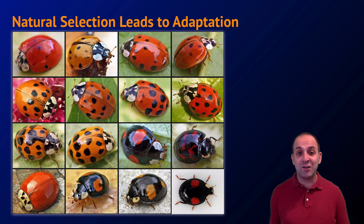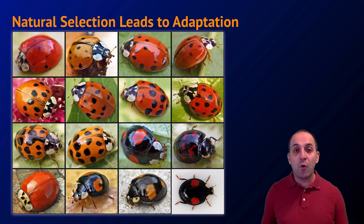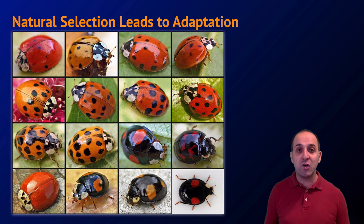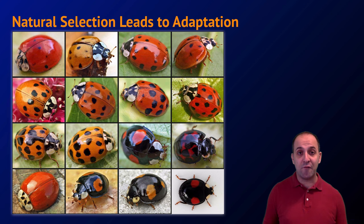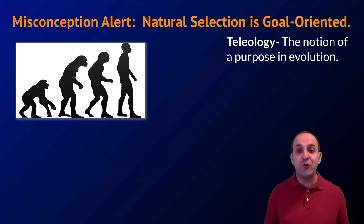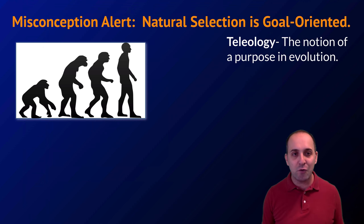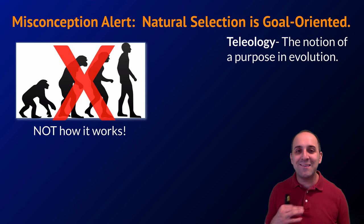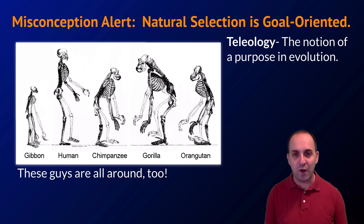Another way to put it is that natural selection leads to the adaptation of a population for its environment. The environment determines which organisms survive and which don't, and since the organisms that survive have the variations that enable them to do best, over time that population becomes more and more adapted for the role it plays in its environment. We should pause here to address a main misconception: the idea that natural selection is driving the population toward some sort of ultimate goal. This idea of purpose in evolution is referred to as teleology, and it's represented in things like the progression from apes to hominids to men. There is no purpose to natural selection.